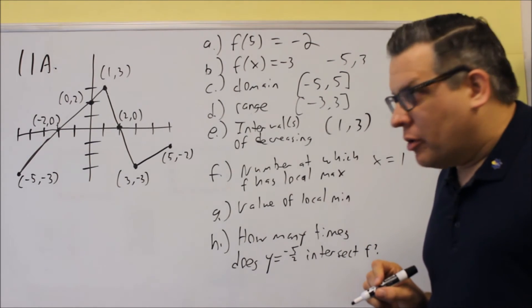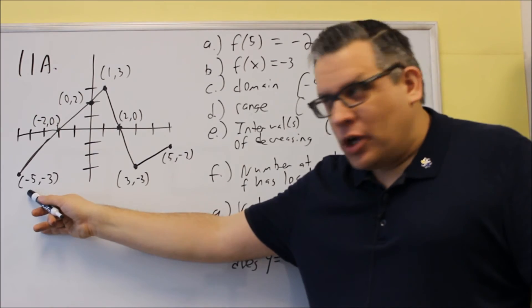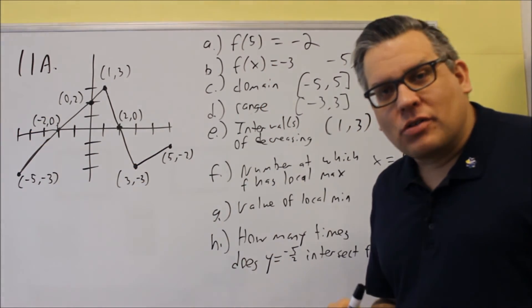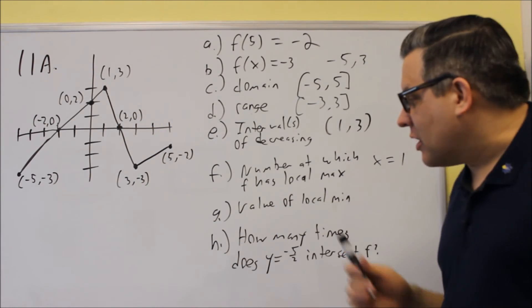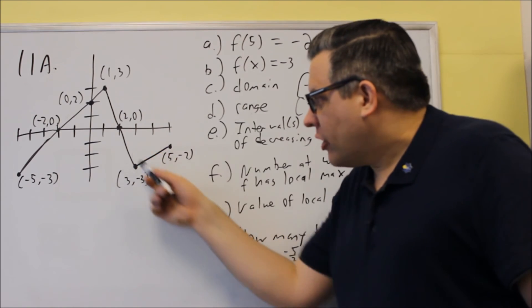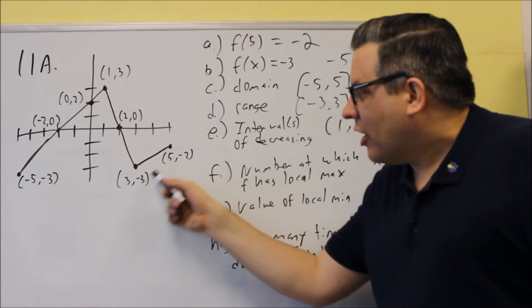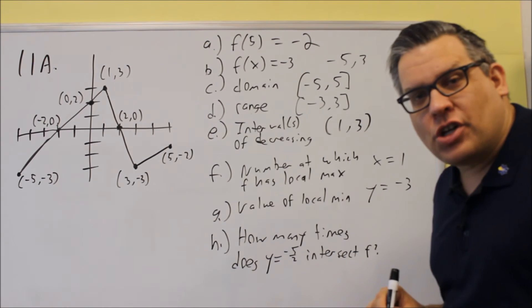We want the value of the local minimum. This point here is not going to be a local min, because we don't have a decreasing part that comes before it. You have to have a decreasing and an increasing part in order for it to be considered a local or relative min. So it only happens at this point right here. So we want to indicate the y value at that point, and that's going to be negative 3. So that's the answer for G.